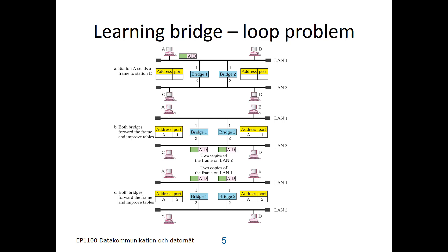Let's first return to the problem of the learning bridge. If we have two learning bridges connecting two local area networks we have a loop problem. Look here — if a frame is sent from A to D, both bridge 1 and bridge 2 will learn that A is located on port 1 and will then forward the frame on port 2. The frame coming from bridge 1 will reach bridge 2 on port 2, so it now says A is located on port 2, and the same way the frame from bridge 2 will reach bridge 1, which will also believe that A is now on port 2. Like this they will continue to forward the frame back and forth and will never converge on a decision of where A is actually located. So when we build extended local area networks we must ensure that there are no loops in the topology.